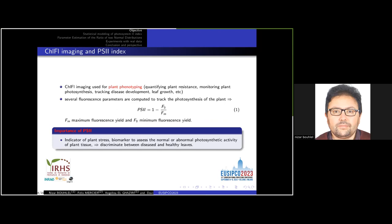Chlorophyll fluorescence imaging has been widely used for plant phenotyping. It helps quantifying plant resistance, monitoring plant photosynthesis, and tracking disease development and leaf growth. Several fluorescence parameters are computed to track the photosynthesis of a plant. The PCI is among the most used chlorophyll fluorescence parameters. This index depends on two measured fluorescence parameters: FM maximum fluorescence yield and F0 minimum fluorescent yield. The PCI serves as a biomarker to assess the normal or abnormal photosynthetic activity of plant tissue, thus making it possible to discriminate between diseased and healthy leaves.